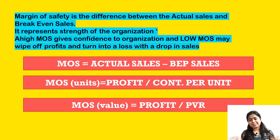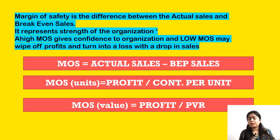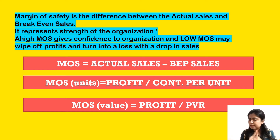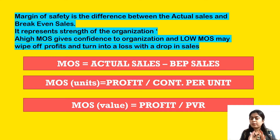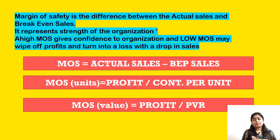Margin of Safety is the difference between actual sales and break-even sales. At the break-even point, the firm incurs neither profit nor loss — they have done all the work but are not gaining profits or incurring losses. At break-even point, profits are zero and loss is also zero — it is a no profit, no loss situation.